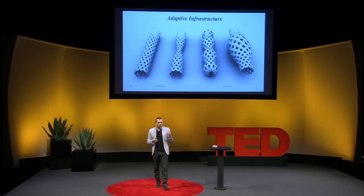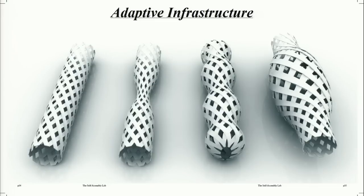Let's go back to infrastructure. We're working with a company out of Boston called Geosyntec, developing a new paradigm for piping. Imagine water pipes that could expand or contract to change capacity or flow rate, or even undulate like peristaltics to move the water themselves — not expensive pumps or valves, but a completely programmable and adaptive pipe on its own.